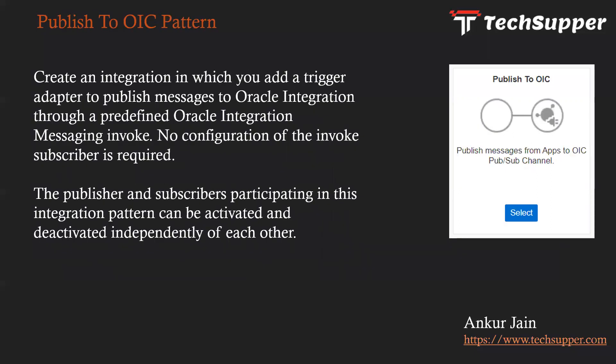The next pattern is Publish to OIC. This is a very useful pattern — you create an integration where you add a trigger adapter to publish messages to Oracle Integration through a predefined Oracle Integration messaging invoke; no configuration of the invoke subscription is required. Every OIC has inbuilt queues that can be used to publish messages. The publisher and subscriber can be activated and deactivated independently. For example, if you have an HRMS application where employees get onboarded and you want to synchronize them to different target applications, you can use a Publish to OIC integration to take data from HRMS and publish those messages into the OIC queue.